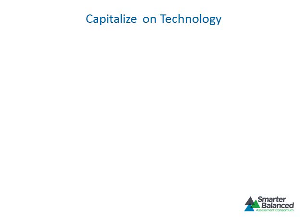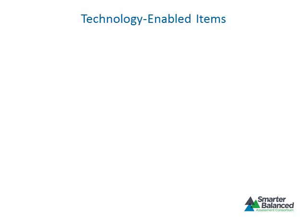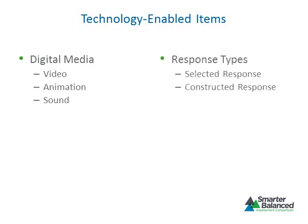In addition to developing traditional selected and constructed response items, Smarter Balanced aims to capitalize on technology to improve the measure of student learning. The consortium aims to develop two types of items: technology-enabled and technology-enhanced. Technology-enabled items use digital media as the stimulus but do not require specialized interactions to produce a response. Possible stimuli could include short video clips, audio recordings of lectures or speeches, or dramatic readings of prose or poetry. Despite the use of these media types, a technology-enabled item requires a student to provide either a selected response or a constructed response consisting of text.